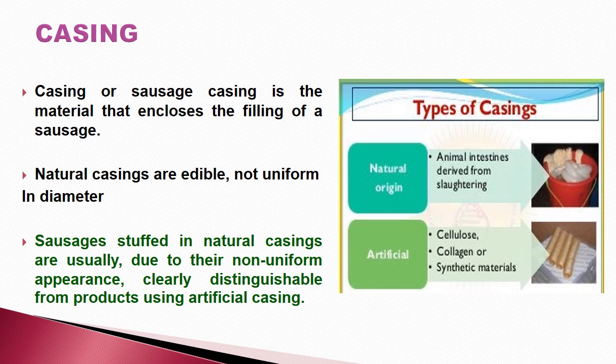Natural casings come from animal intestine after proper processing. These intestines must be collected from healthy animals during slaughter with proper inspection. Synthetic or artificial casings are made from cellulose, collagen, or other synthetic materials.